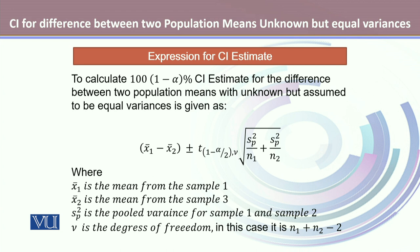In the expression, x̄₁ is the mean from sample 1, x̄₂ is the mean from sample 2, SP² is the pooled variance from sample 1 and sample 2, and ν is the degrees of freedom, which in this special case is n₁ plus n₂ minus 2.